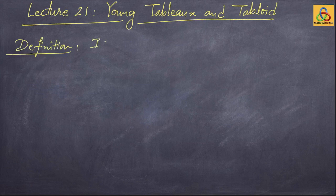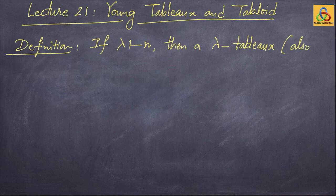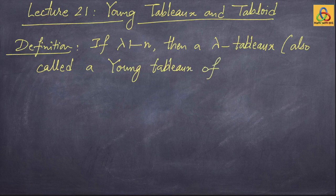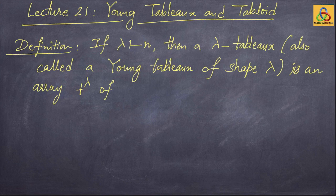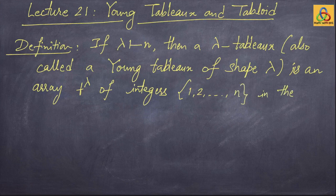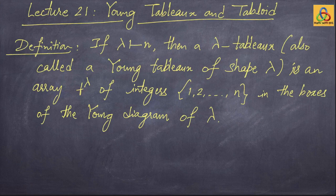Let us begin with this definition. If λ is a partition of n, then a λ-tableau, also called a Young tableau of shape λ, is an array of integers 1 to n placed in the boxes of the Young diagram of λ. Basically, a λ-tableau is simply the Young diagram with the numbers 1 to n filled in the n boxes.